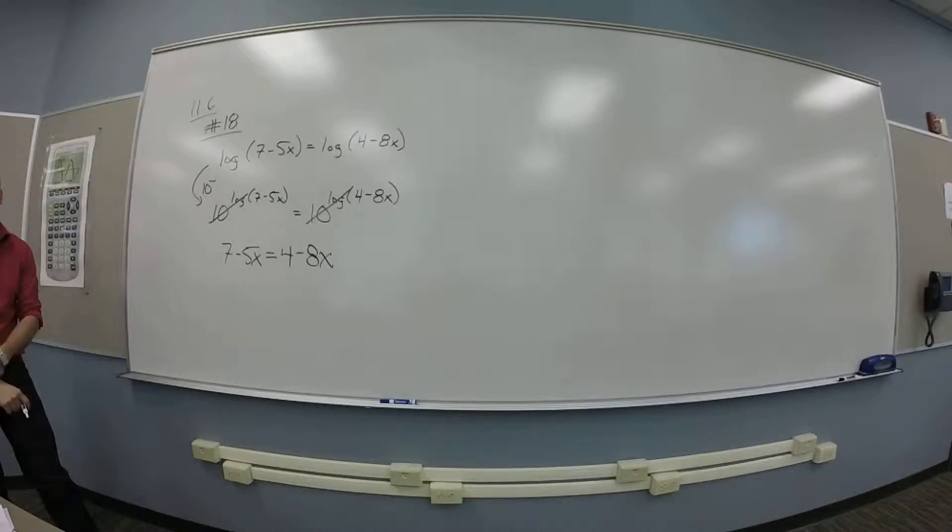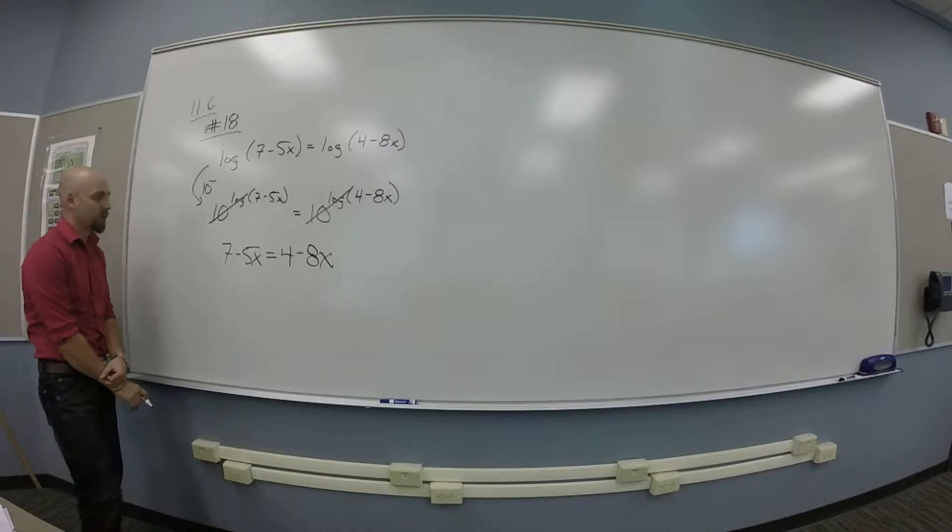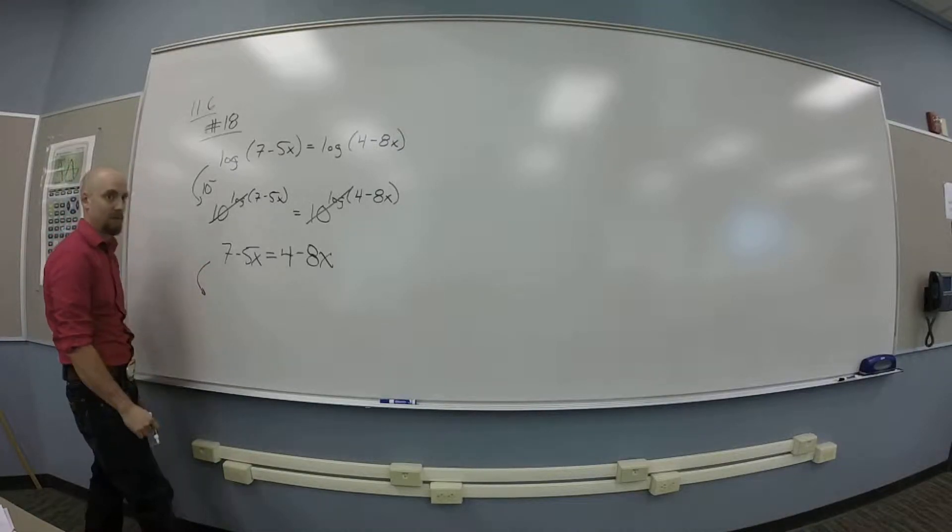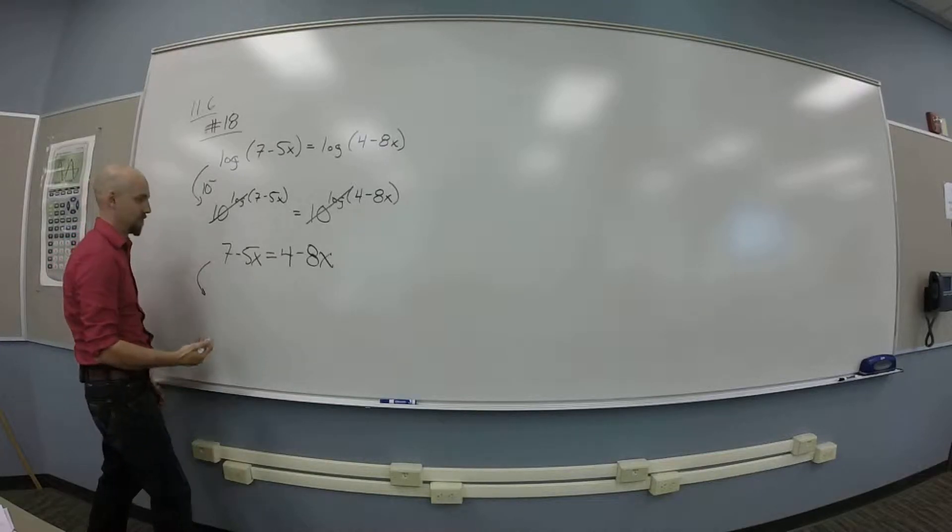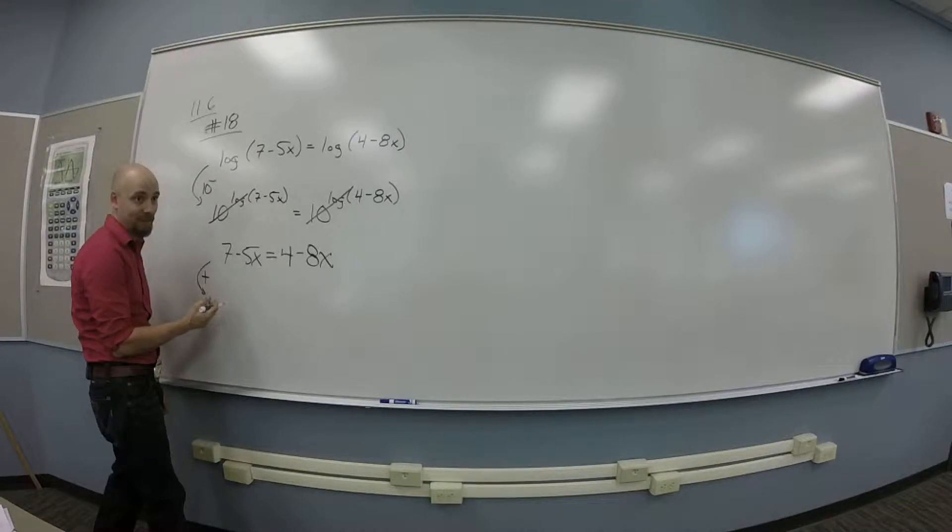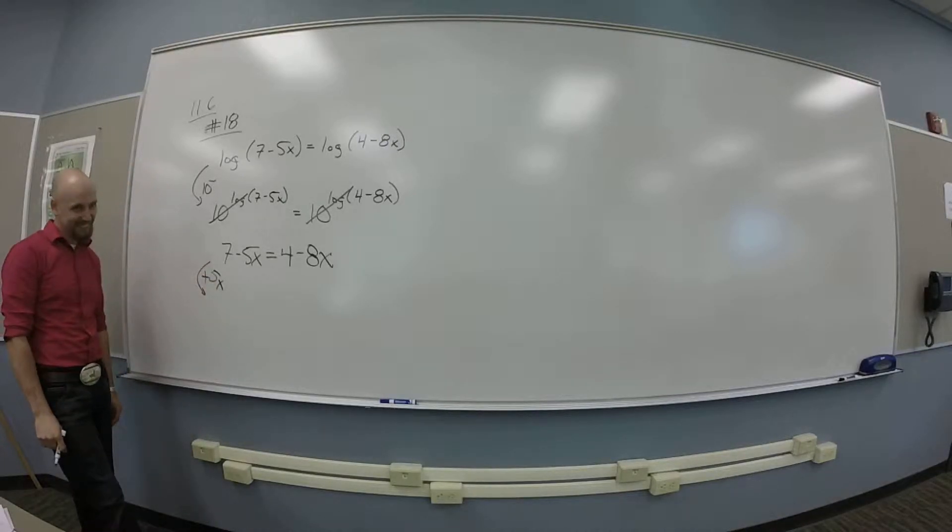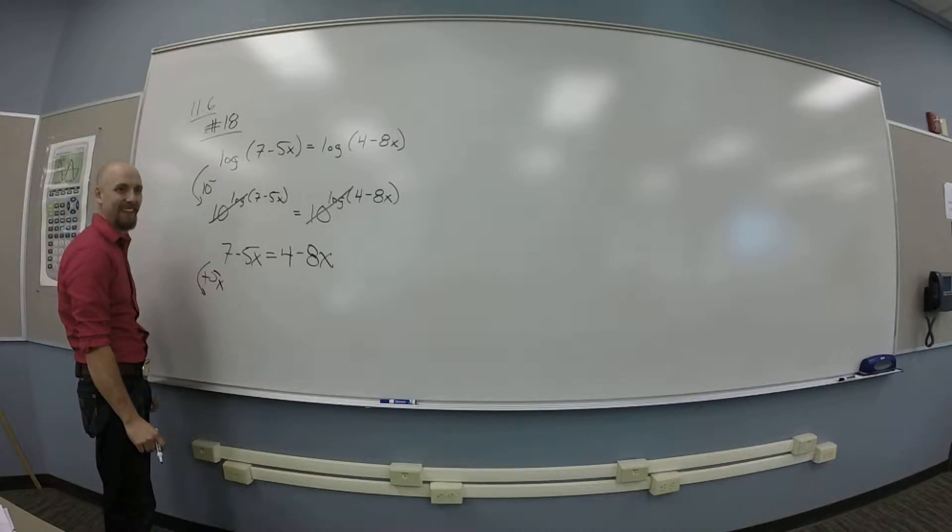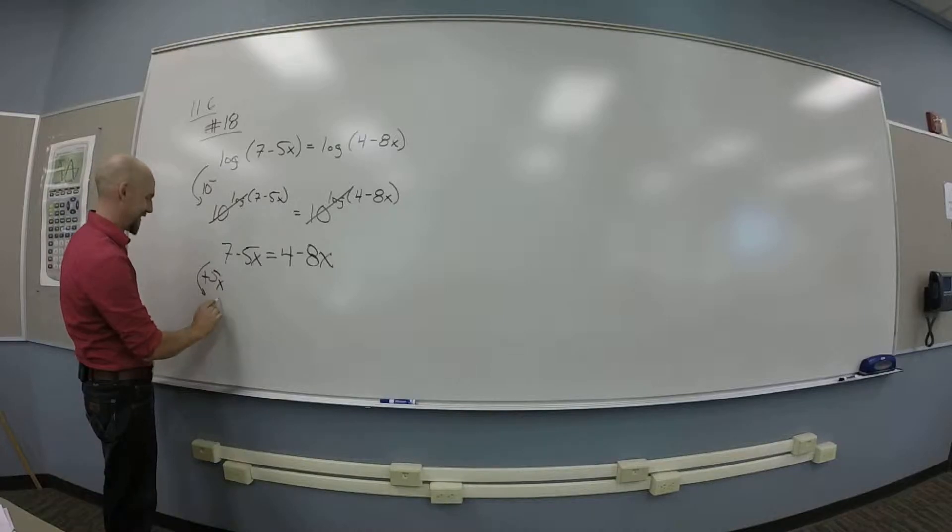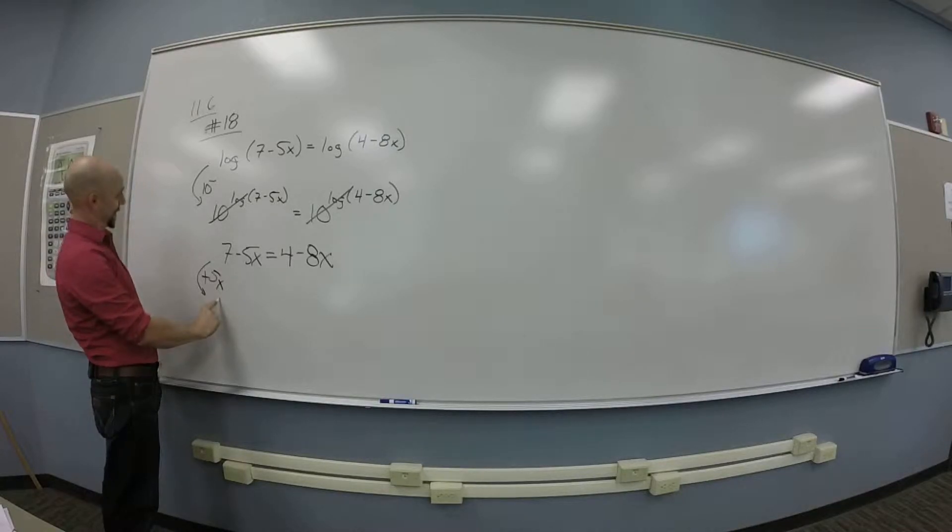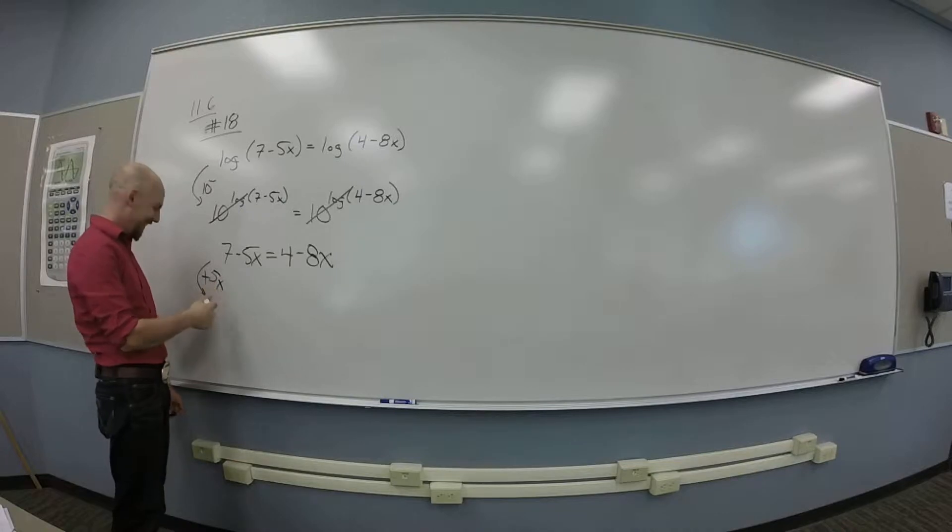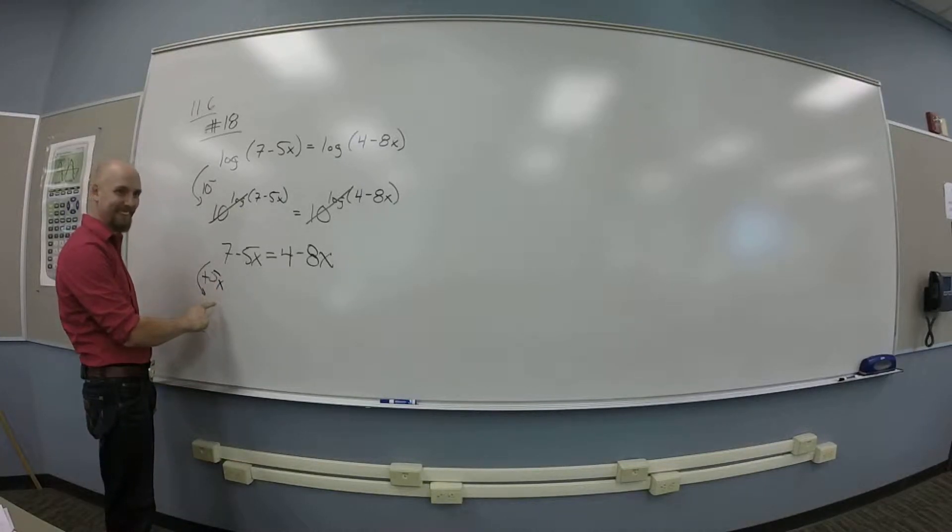So what should I do? Move it to the other side. We'll add 5x. So what do I get on the left? Add 5x to both sides. So you get 7 on the left.